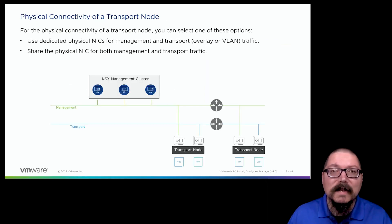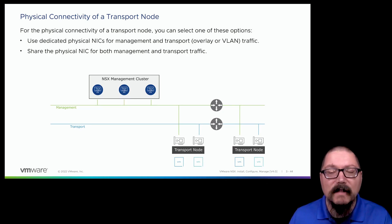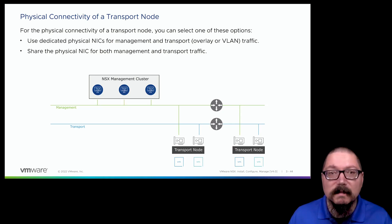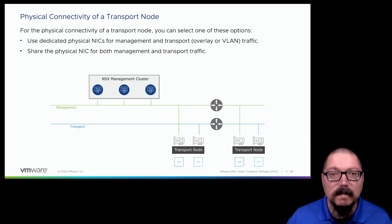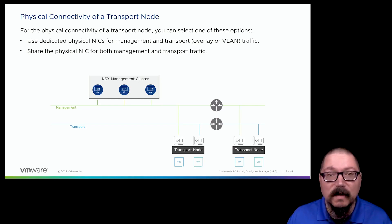A transport node needs connectivity to two types of networks. One is the management network; the other is what we term the transport networks. In the context of NSX, that often means a VLAN used to carry overlay traffic, but it could also mean the VLANs that virtual machines live on. I need connectivity to both: the management network for NSX configuration, and the transport network so virtual machines can send traffic wherever they need to go.